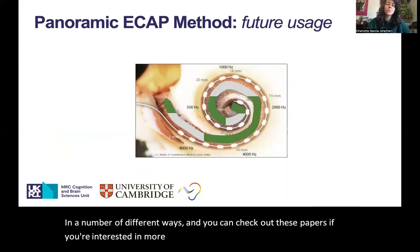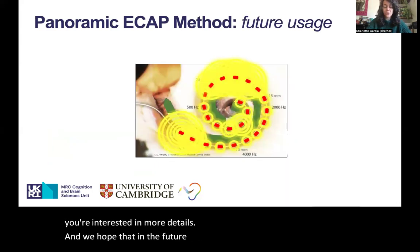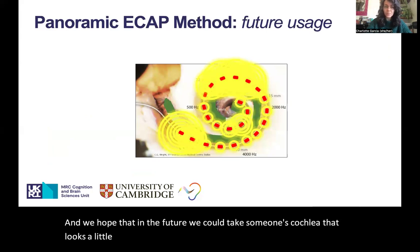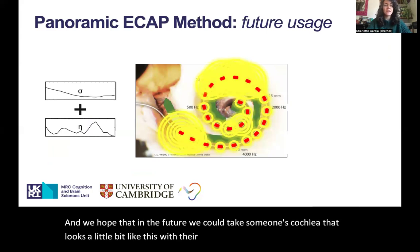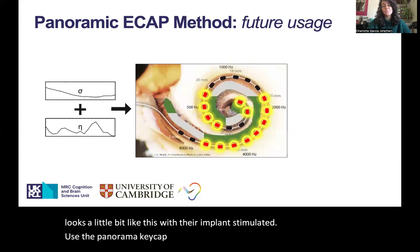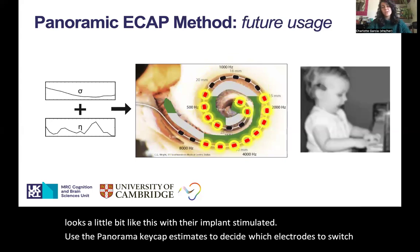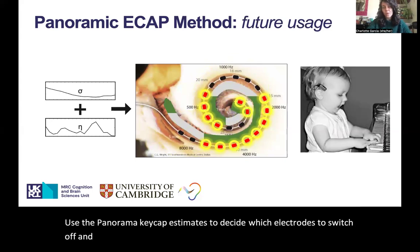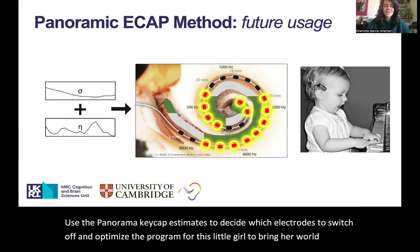We hope that in the future, we could take someone's cochlea that looks a little bit like this with their implant stimulated, use the panoramic ECAP estimates to decide which electrodes to switch off and optimize the program for this little girl to bring her world into sharper focus.